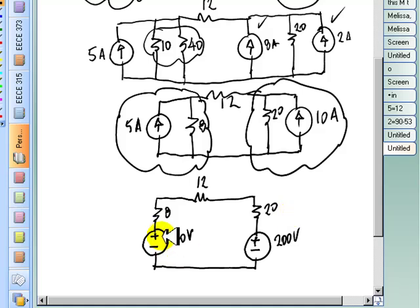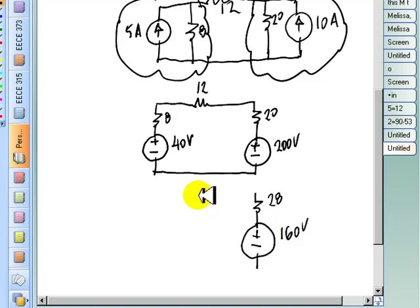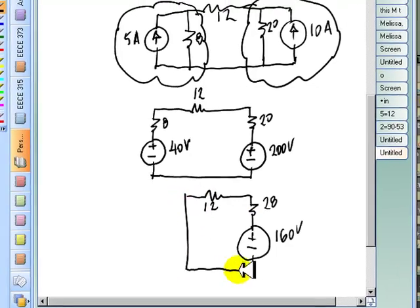And now these two sources are in series, so we can combine them into a single source. And this resistor and that resistor are also in series. We combine them into a 20 ohm resistor. So let's say this is 28 ohms. And this combined with that one, this wins. And the voltage is 160 volts, like so. We have not touched the 12 ohms resistor, that is the target of our problem.